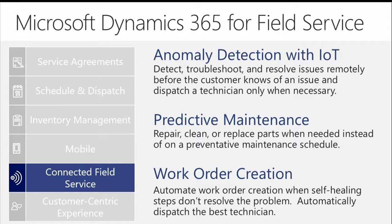We can use the algorithms and patterns found over time to predict when things may fail, giving us a more proactive situation where we can replace components when needed rather than waiting to trigger a service call — which could leave a customer down for an extended period. Using those same capabilities, we can look at a specific type of anomaly and, based on past experience, automatically create a work order and dispatch somebody right away, cutting out the middleman entirely.